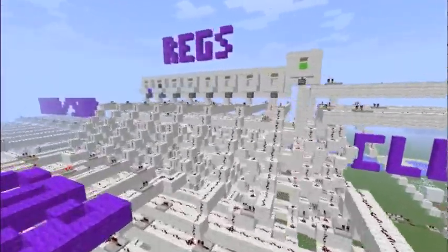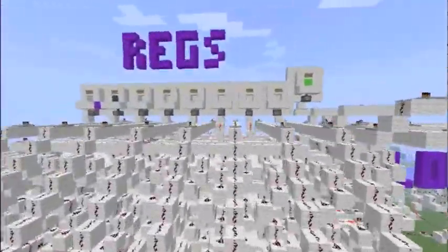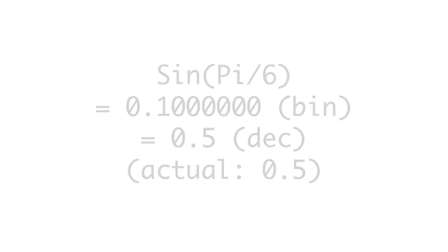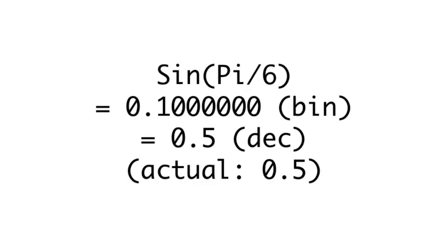The CPU has again reached a halting state. The result is one half, which is the exact value of sine of pi over 6.